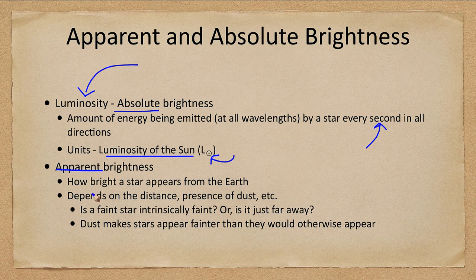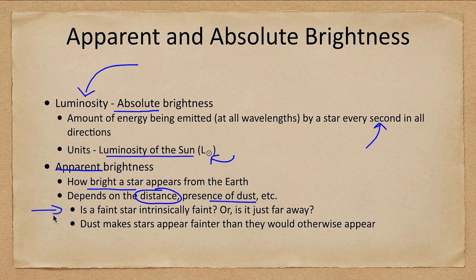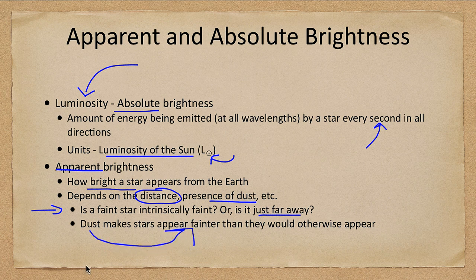Apparent brightness is how bright a star appears from Earth and depends on the distance. A star that is very far away will naturally appear fainter than if that same star were close. It can also depend on the presence of dust, which could cause the star to dim. The question is: is a faint star really faint, or is it far away? If we just look at a star in the sky, we don't know whether it's a faint star or a really bright star that is very far away — that requires other measurements. Dust makes stars appear fainter by absorbing some of their light.